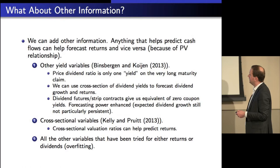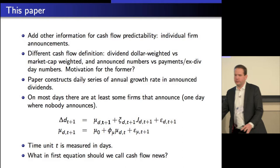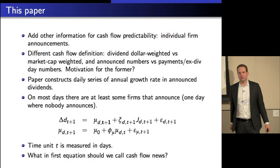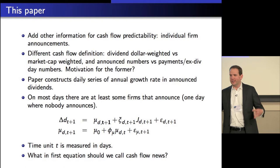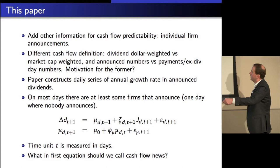Callie and Pruitt said: use the cross-section of valuation ratios to fix this problem and better tease out mu and g. What this paper says — and that's so nice about it — is: I'm going to get a better information source, I get more information. But I don't have to worry about data mining because I get information that certainly has to matter. Firms announced the dividends three months before, so why wouldn't we just use that information in this equation rather than just using realized dividends?